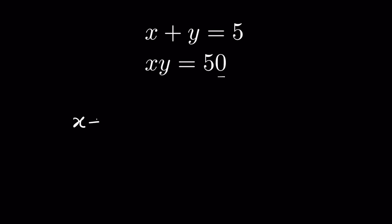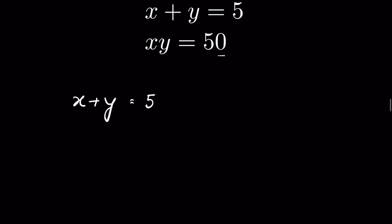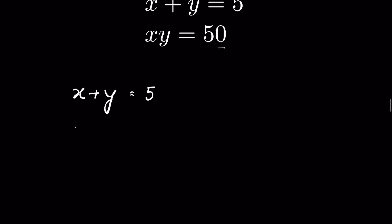Given x plus y is equal to 5, we can find the value of x, so x is equal to 5 minus y.